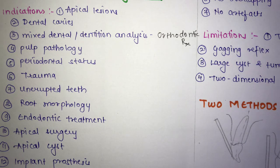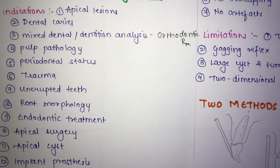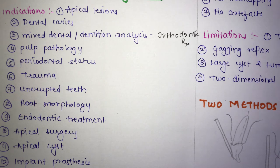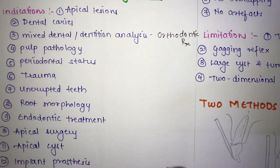Next is endodontic treatment — during endodontic treatment, periapical radiography is used to assist in determining working length. Next is apical surgery — pre-operative assessment and post-operative appraisal of apical surgery can be done with periapical radiography. Next is apical cyst — detailed evaluation of apical cysts and other lesions within the alveolar bone. Finally, implant prosthesis — assessing bone availability for implants and post-operative implant evaluation.